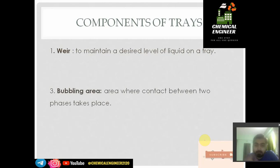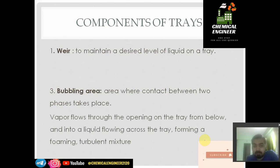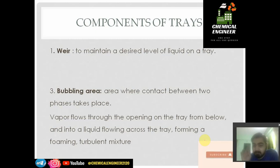The second component is the bubbling area. The bubbling area is nothing but the holes present in the trays from which vapor goes up. Vapor forms bubbles, and those bubbles are the ones responsible for mass transfer, because mass transfer takes place through the surface of those bubbles. That area of holes is known as the bubbling area. The vapor flows through the opening of the tray from below, and liquid flows across the tray forming a foaming turbulent mixture. An important point: in any distillation column, the Reynolds number should always indicate a turbulent mixture, so that better efficiency can be obtained.